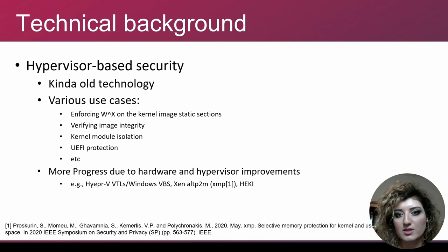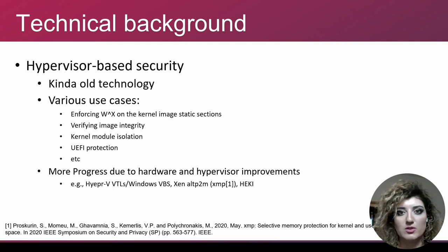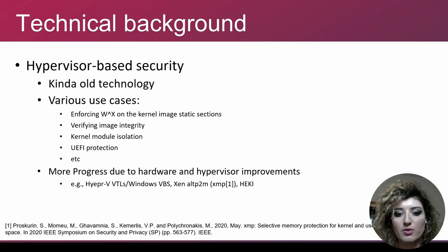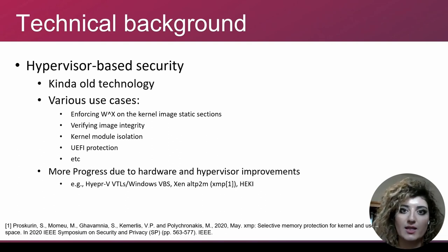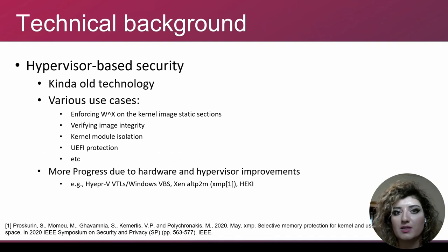Recently, with better hardware virtualization support, we see these techniques getting more attention and more practical — they can even be used for more dynamic monitoring or enforcing security checks. That's why we see more progress on different hypervisors, for example Hyper-V introducing virtual trust levels, and Windows VBS supporting security features like Code Guard and Device Guard. We also had HEKKI introduced recently, and Xen has had more dynamic memory protection features, giving different views of the address space for better compartmentalization through its P2M feature.